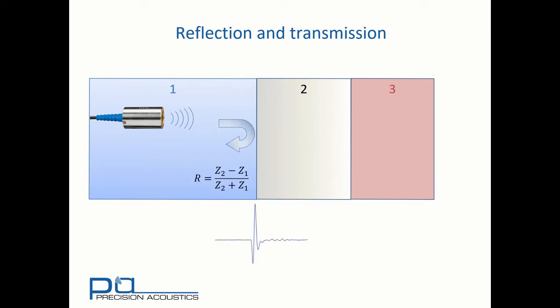At this interface, we may see partial reflection, and the magnitude of that reflection is given by the reflection coefficient, which is the difference of the two acoustic impedances over the sum of the two acoustic impedances. There may also be transmission, and the transmission coefficient is also shown.